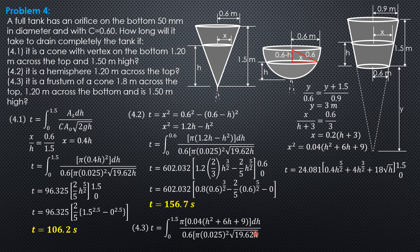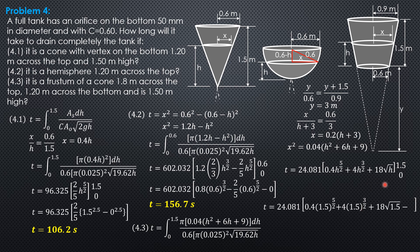The third term: 9/√H = 9H^(−1/2). Its integral is 9H^(1/2) / (1/2) = 18√H. Evaluating from 0 to 1.5: 24.081 × [0.4 × 1.5^(5/2) + 4 × 1.5^(3/2) + 18√1.5 − 0]. The lower limit terms all contain H, so they equal zero. The time is equal to 734.4 seconds. That's it for this problem.